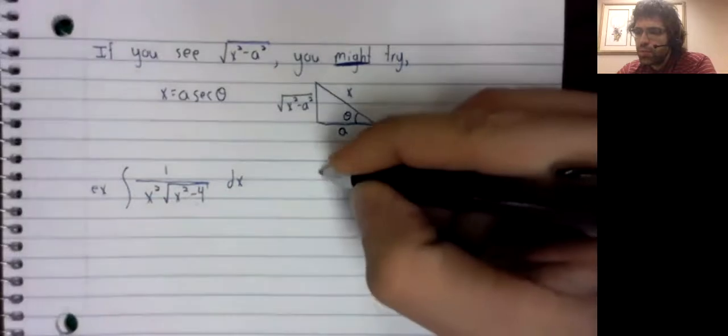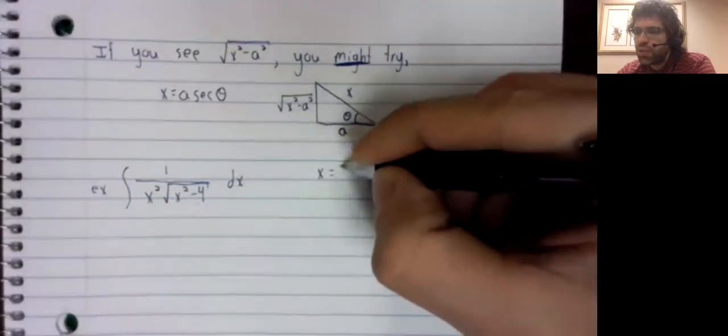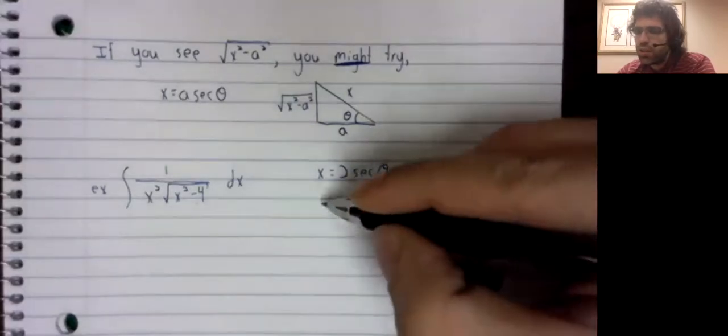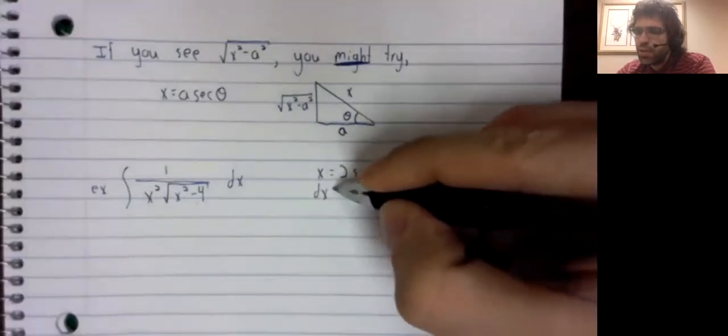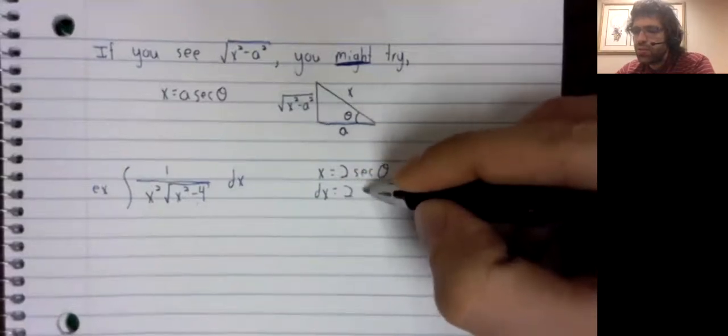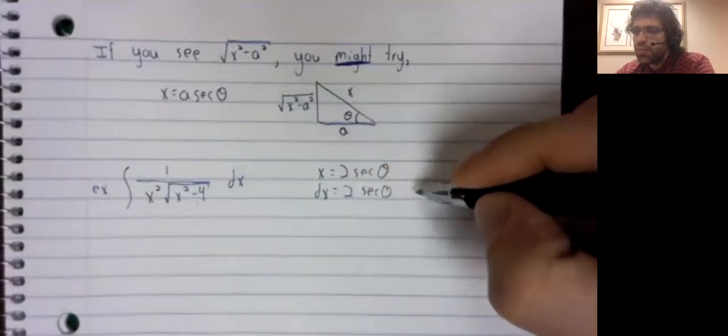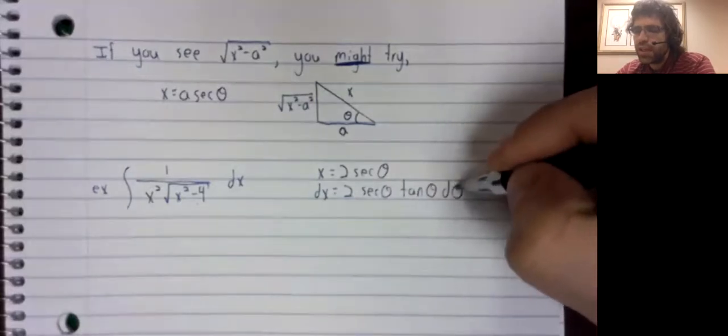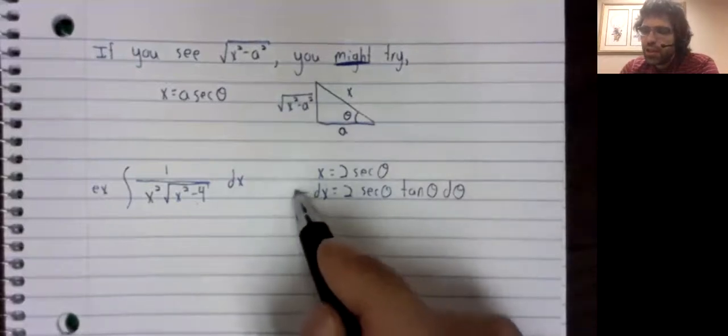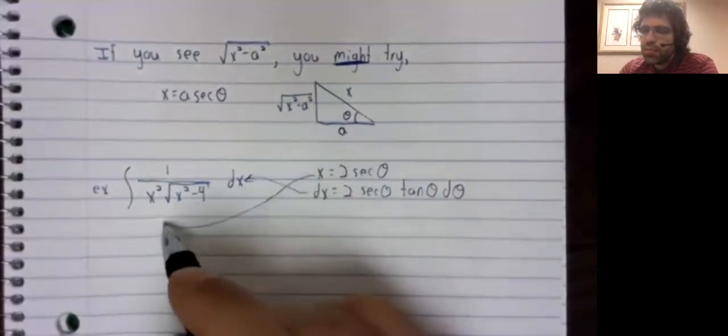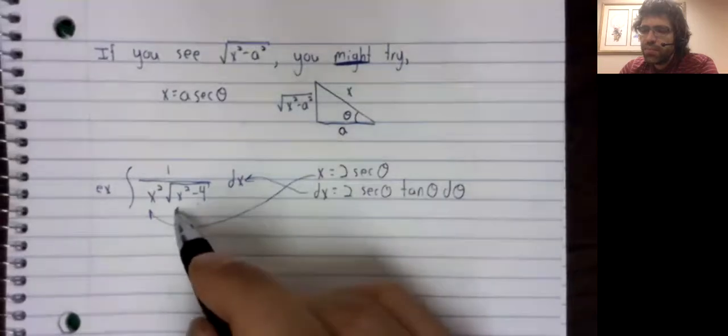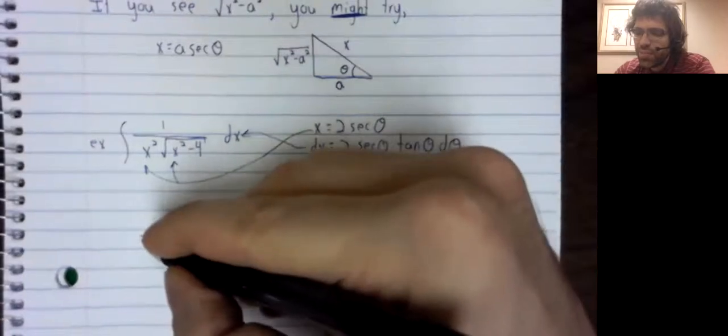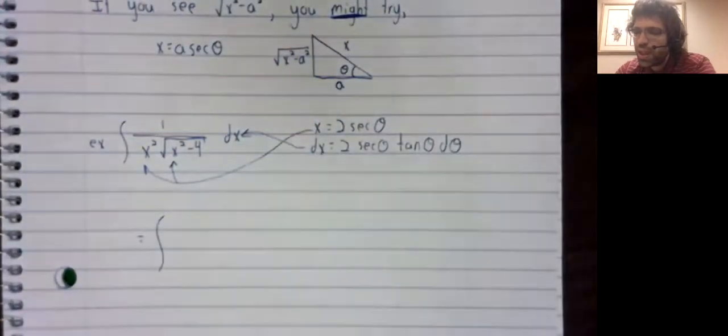So we'll try letting x be 2 times the secant of theta, that makes dx 2 times the secant times the tangent. And we will plug these in and see whatever we see. Hopefully something nice.